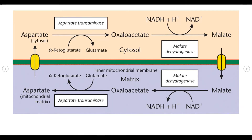Cytoplasmic NADH अपना hydrogen oxaloacetate को दे देती है, then oxaloacetate gets converted into malate. Malate then enters into mitochondria, जहाँ इसकी further oxidation होती है - it forms oxaloacetate and synthesizes NADH. Oxaloacetate फिर gets converted into aspartate, which is then transported back to cytoplasm, जहाँ aspartate फिर oxaloacetate में convert हो जाता है।